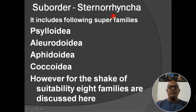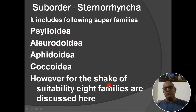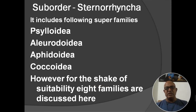Next sub-order: Sternorrhyncha. This contains some super-families also — Psylloidea, Aleyrodoidea, Aphidoidea, and Coccoidea. For suitability, I am describing the 8 families here without separately describing the super-families.